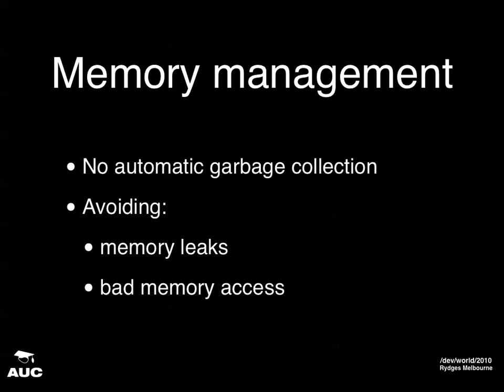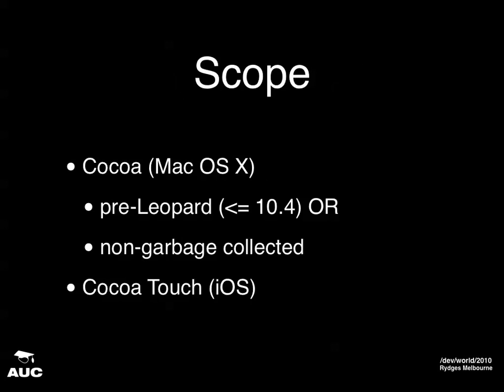So just to give you an idea of what the talk's about — memory management. We're talking about Cocoa environments where we don't have automatic garbage collection, and how we manage our memory to avoid things like leaking memory and accessing memory when we shouldn't. The scope covers Cocoa Touch on iOS where there's no option but to use memory-managed code, and also a lot of Mac OS X programming.